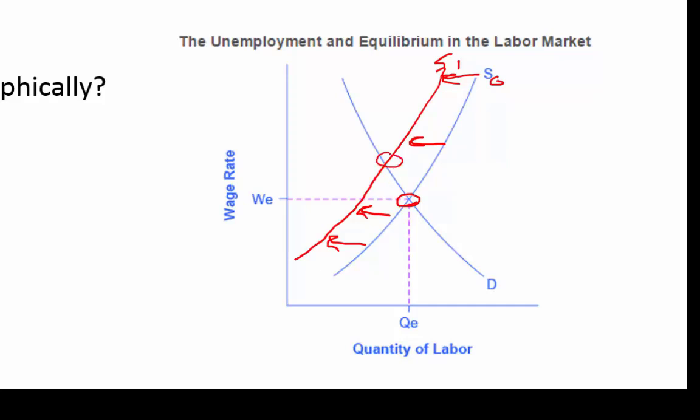If we're operating at this new equilibrium, wages will rise — that's the new, higher wage. So wages will rise. What about employment? There will be a decrease in equilibrium quantity of employment. However, if the total labor force is getting smaller overall, the unemployment rate is not necessarily going to increase, because the total pool is shrinking as baby boomers retire.